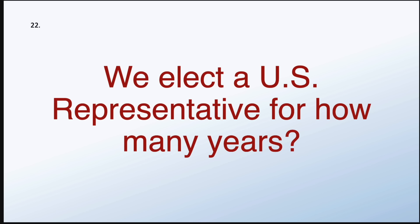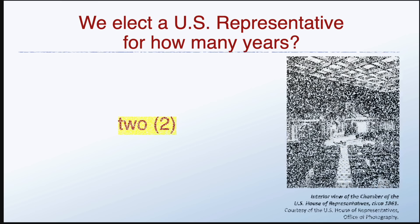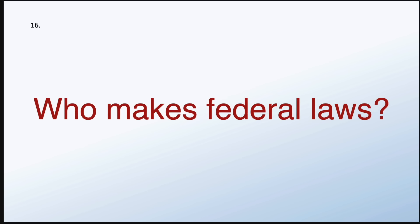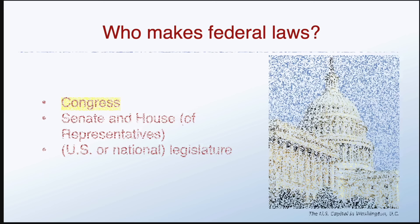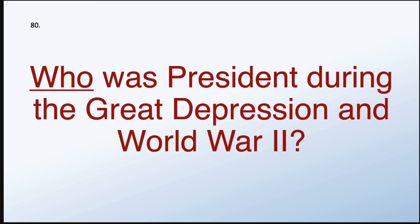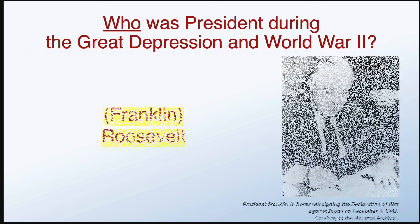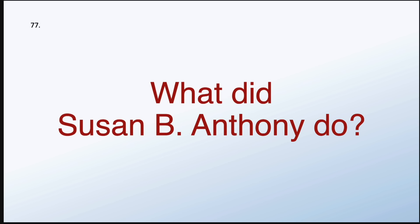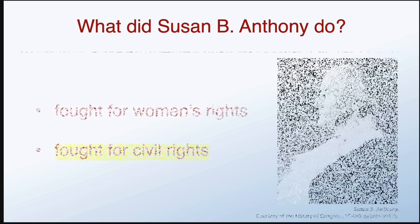We elect a U.S. representative for how many years? Who makes federal laws? Congress. Who was president during the Great Depression and World War II? Franklin Roosevelt. What did Susan B. Anthony do? She fought for civil rights or fought for women's rights.